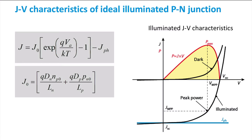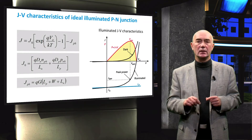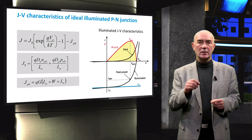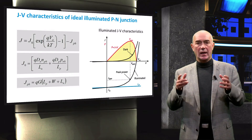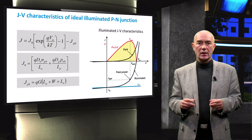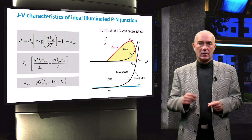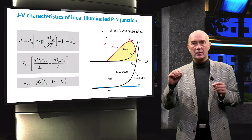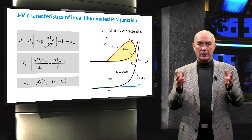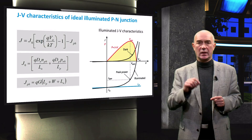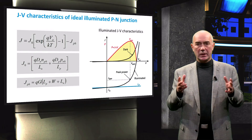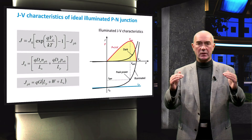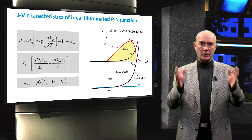When a load is connected to an illuminated P-N junction, the voltage drop at the load can be considered as a forward bias voltage applied to the junction. The equation of photocurrent density indicates that only the carriers generated within the diffusion length from the edges of the depletion region and generated in the depletion region have the chance to be separated and collected. When light shines on a P-N junction diode, a large drift current due to minority carriers flows from the N-type region to the P-type region, called photocurrent. Illumination shifts the dark JV curve downward by an amount equal to the photocurrent density.